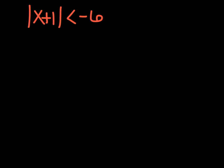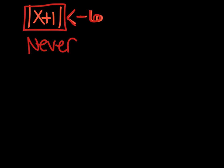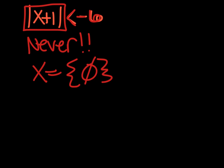Here's a similar problem: the absolute value of x plus 1 is less than negative 6. You could start solving this and get some numbers, but if you checked them they wouldn't actually work, because absolute value is never less than negative 6 — it's never negative, never. So the last one was always, this one's never. There are no x's that work. It's the empty set — no solution.